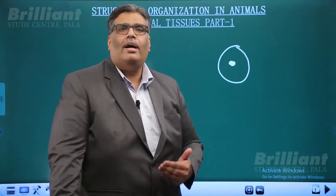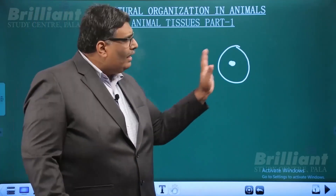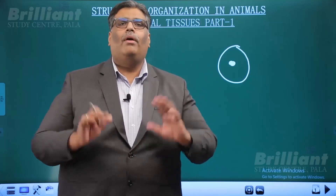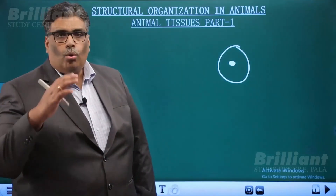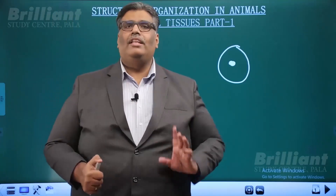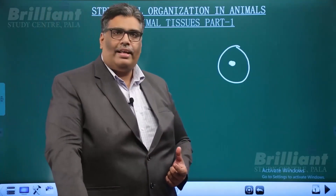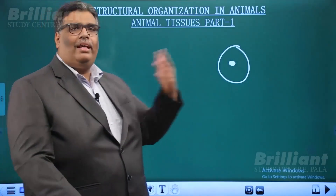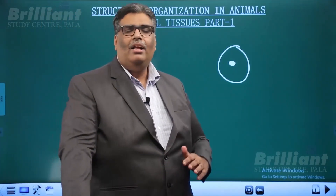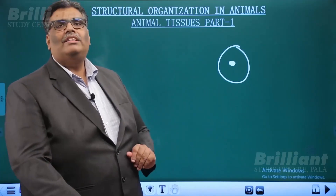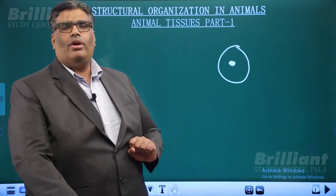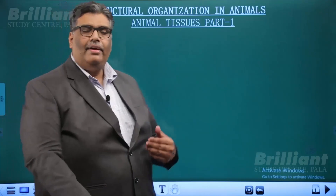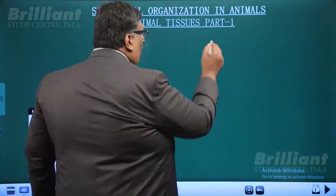That's what we call multicellular organisms. In multicellular organisms, 'multi' means many — so more than one cell, so many cells are there in a multicellular organism. In multicellular organisms, we come across a particular term called tissues.